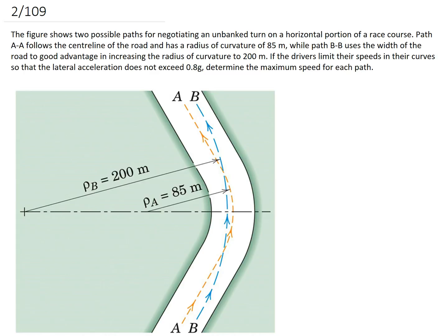Path A follows the centreline of the road and has a radius of curvature of 85 metres, while Path B uses the width of the road to good advantage in increasing the radius of curvature to 200 metres. If the drivers limit their speeds in their curves so that their lateral acceleration, or their normal acceleration, does not exceed 0.8 g's, determine the maximum speed for each path.